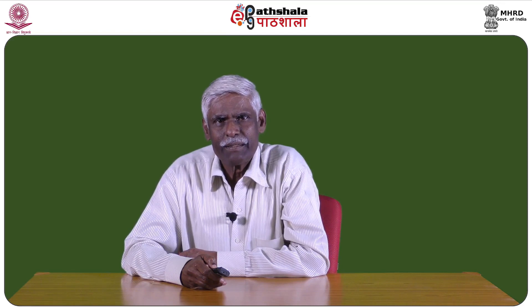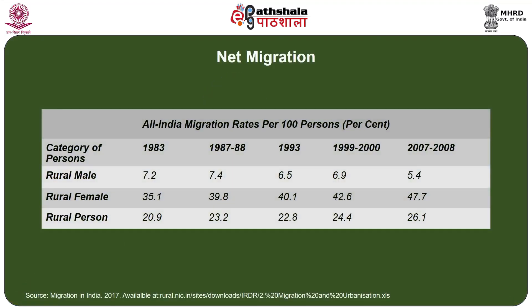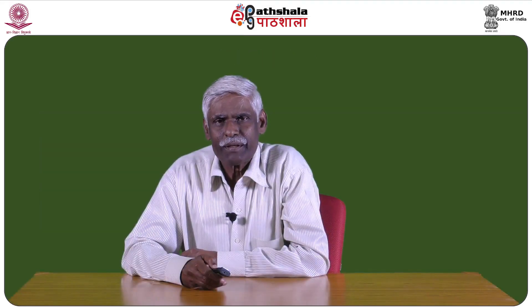An important contributor to urbanization is migration, where people move from rural to urban areas. Looking at rural-urban migration, the percent share of female migrants from rural areas was 35.1 percent in 1983 and has been steadily increasing, with figures for 2007-2008 indicating that almost half of females in rural areas can be classified as migrants, with marriage being a major reason for their migration.